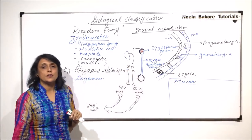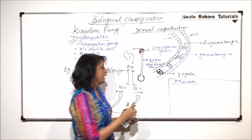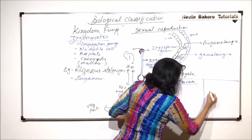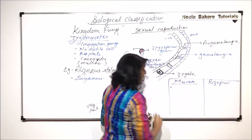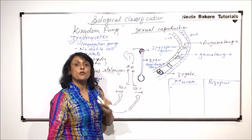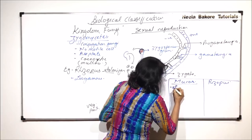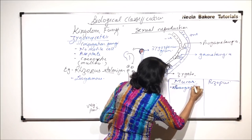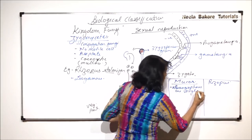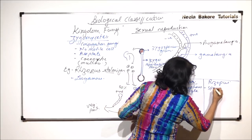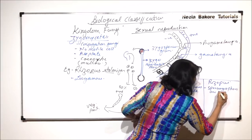There is one more example of zygomycetes and that is Mucor. There are few differences between Rhizopus and Mucor. Most of the things are same. Now, let us take the differences. We will write Mucor here and Rhizopus here. In Mucor, these sporangiophores which are found, they are single. So sporangiophores are single. Whereas in this, the sporangiophores are in clusters.